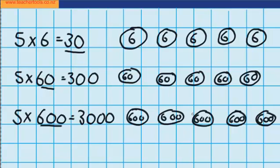And just like last time, we can check our answer by adding if we wanted to. 600 plus another 600 is 1200. Plus another 600 is 1800. Plus another 600 is 2400. And plus another 600 is 3000.